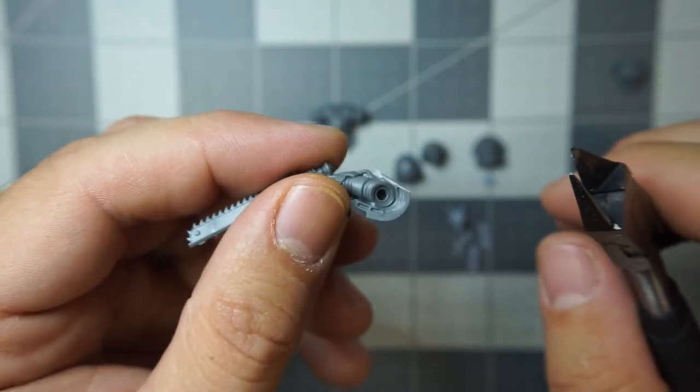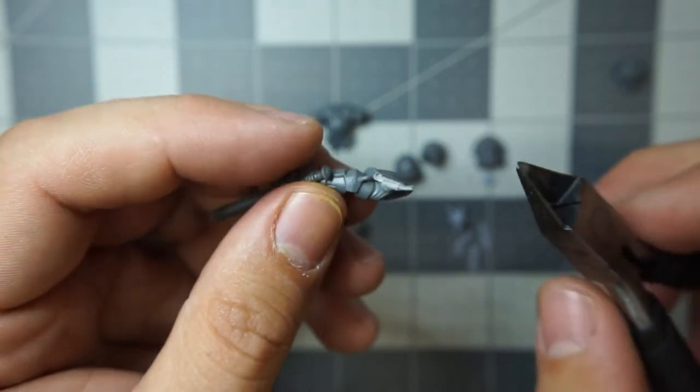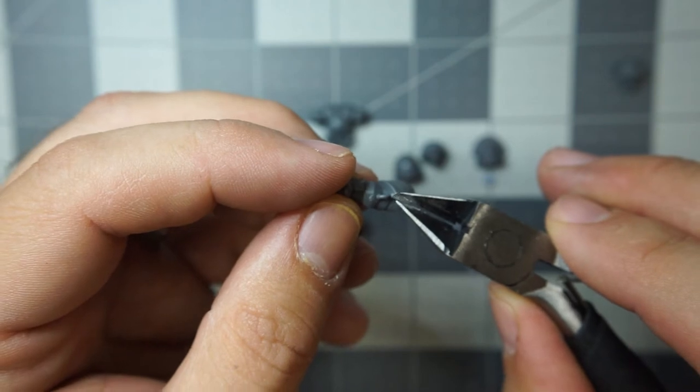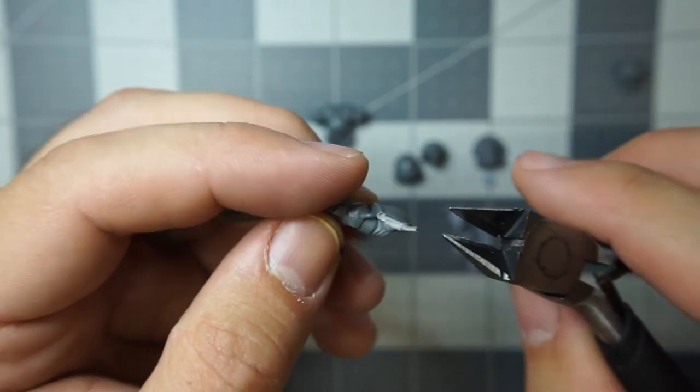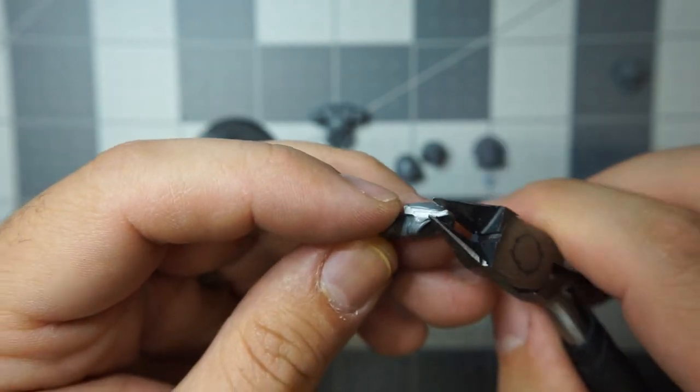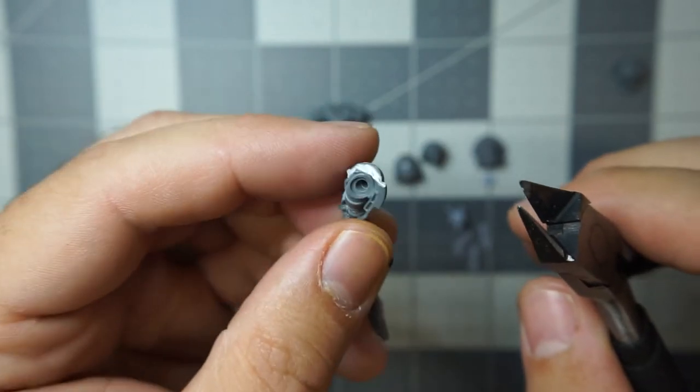But basically, you just get into cutting. There it goes. These things are going to be launching all over the place. Now, I want to retain that wire. I don't want to try to cut into that so I'm going to work around the opposite way first. Scary, right?